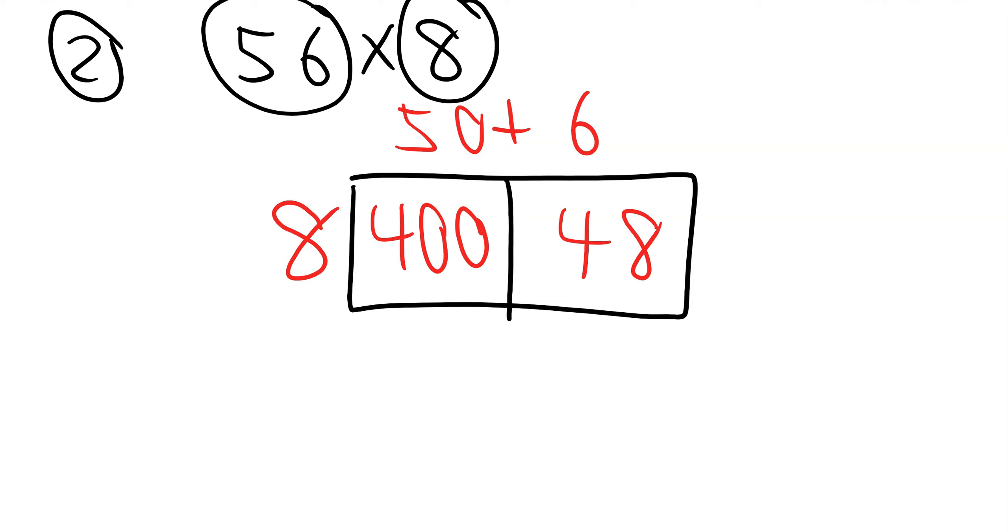Next, I add the two numbers. 400 plus 48 equals 0 plus 8 is 8, 0 plus 4 is 4, 4 plus 0 is 4, 448.